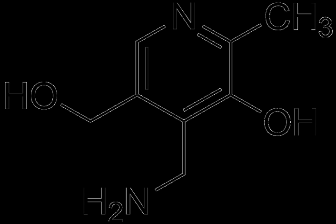Vitamin B6 is absorbed in the jejunum and ileum by passive diffusion. With the capacity for absorption being so great, animals are able to absorb quantities much greater than necessary for physiological demands. The absorption of pyridoxal phosphate and pyridoxamine phosphate involves their dephosphorylation catalyzed by a membrane-bound alkaline phosphatase. Those products and nonphosphorylated forms in the digestive tract are absorbed by diffusion, driven by trapping of the vitamin as 5-phosphates through the action of phosphorylation by a pyridoxal kinase in the jejunal mucosa. The trapped pyridoxine and pyridoxamine are oxidized to pyridoxal phosphate in the tissue. The products of vitamin B6 metabolism are excreted in the urine, the major product of which is 4-pyridoxic acid.